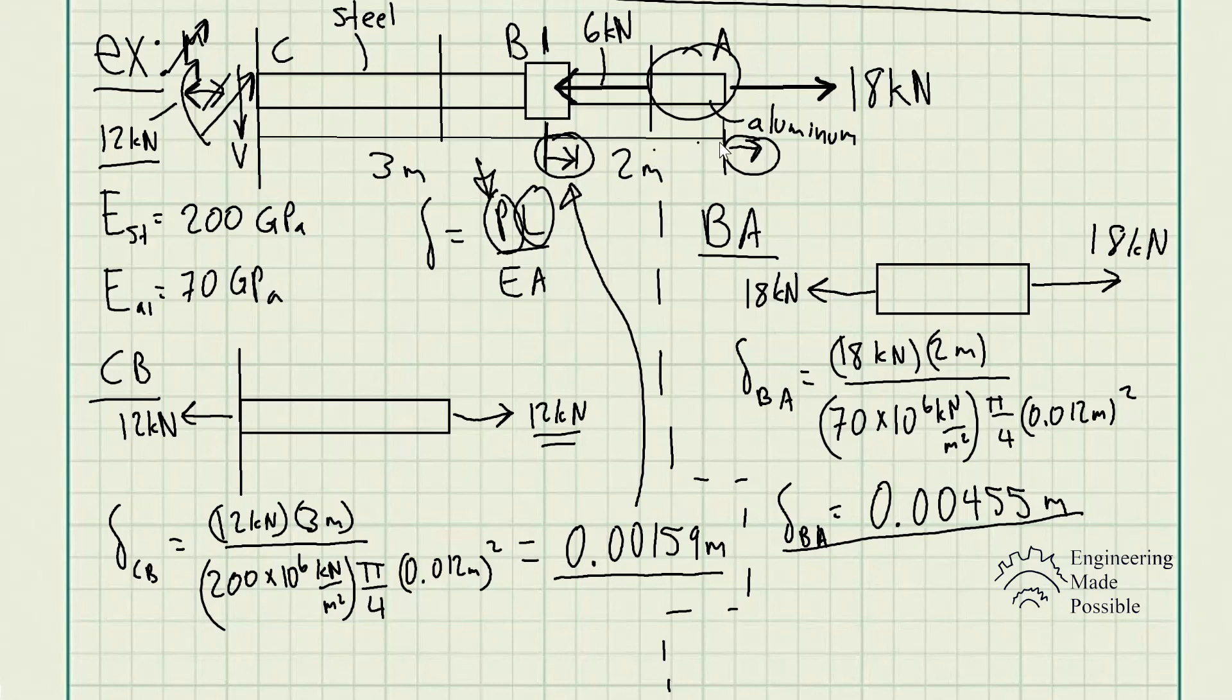So the total deformation, delta total, is equal to the deformation of rod CB plus the deformation of rod BA. We just add them up and that gives us a total deformation of 6.14 millimeters. I converted it to millimeters from meters. This is the answer for this problem statement. This is one thing you have to be aware of.